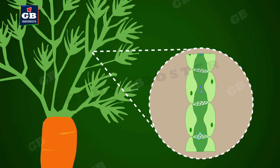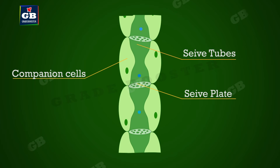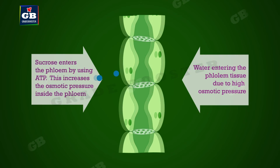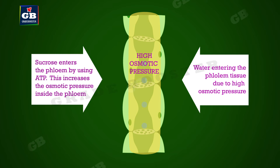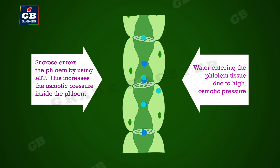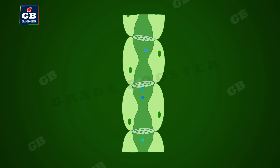The transport of soluble products of photosynthesis from the leaf to other parts is called translocation. Translocation of food and other substances takes place in the sieve tubes with the help of adjacent companion cells, in both upward and downward directions. Translocation in phloem is achieved by utilizing energy; materials like sucrose are transferred using energy from ATP, which increases the osmotic pressure of the tissue, causing water to move into it.